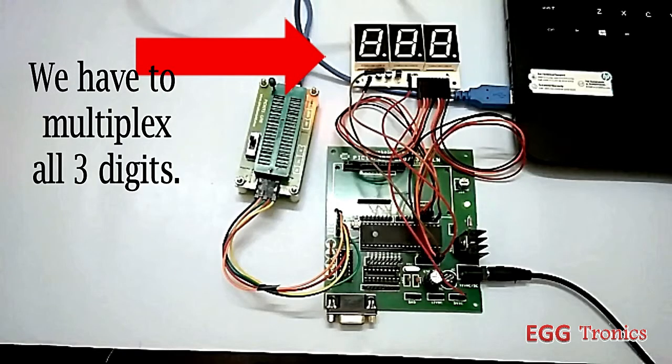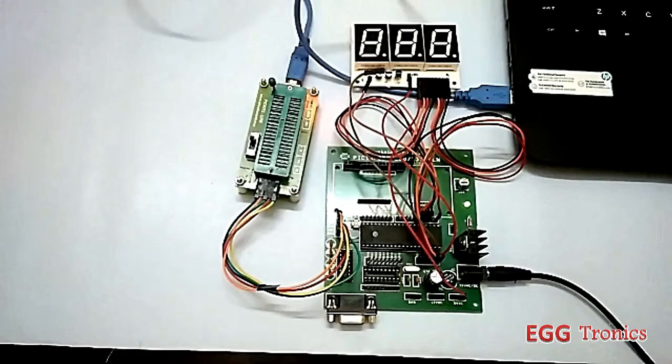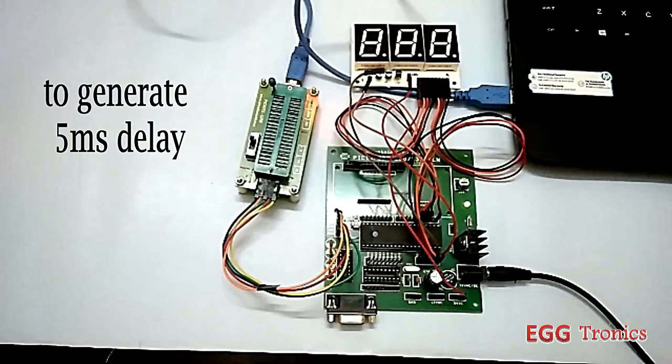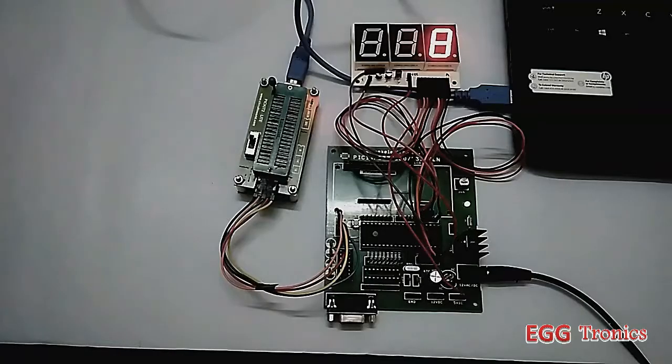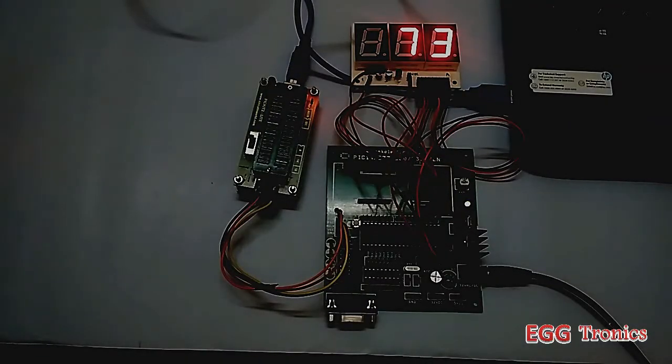After this, now I have to multiplex three digits. Since all three digits are on same data line, we have to switch between each digit for a small time such as 5 milliseconds. In order to achieve this, I used timer 0 in 16-bit mode to generate a delay of 5 milliseconds, and I wrote a code to roll the display from 0 to 999.